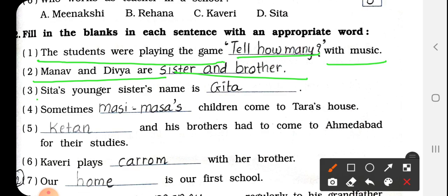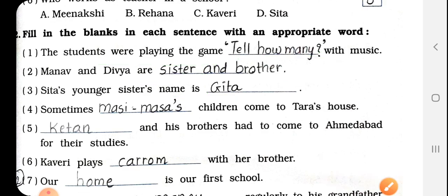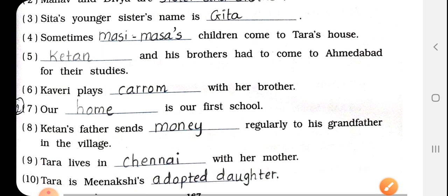Next, number 3: Sita's younger sister's name is Dash. Sita की छोटी बहन का नाम क्या है? तो Geeta है. G-E-E-T-A — Geeta.